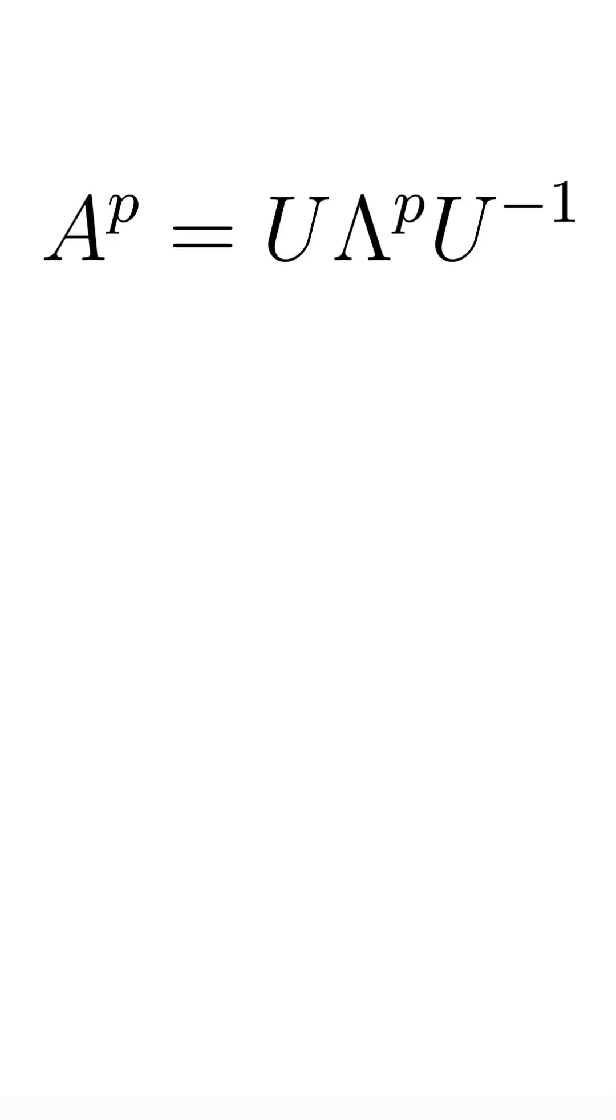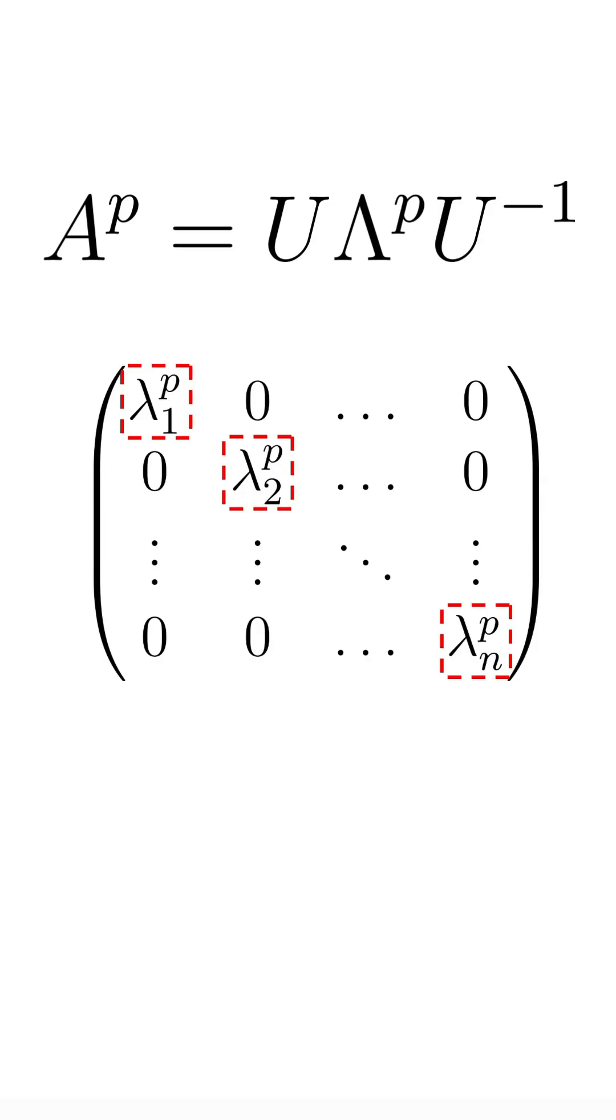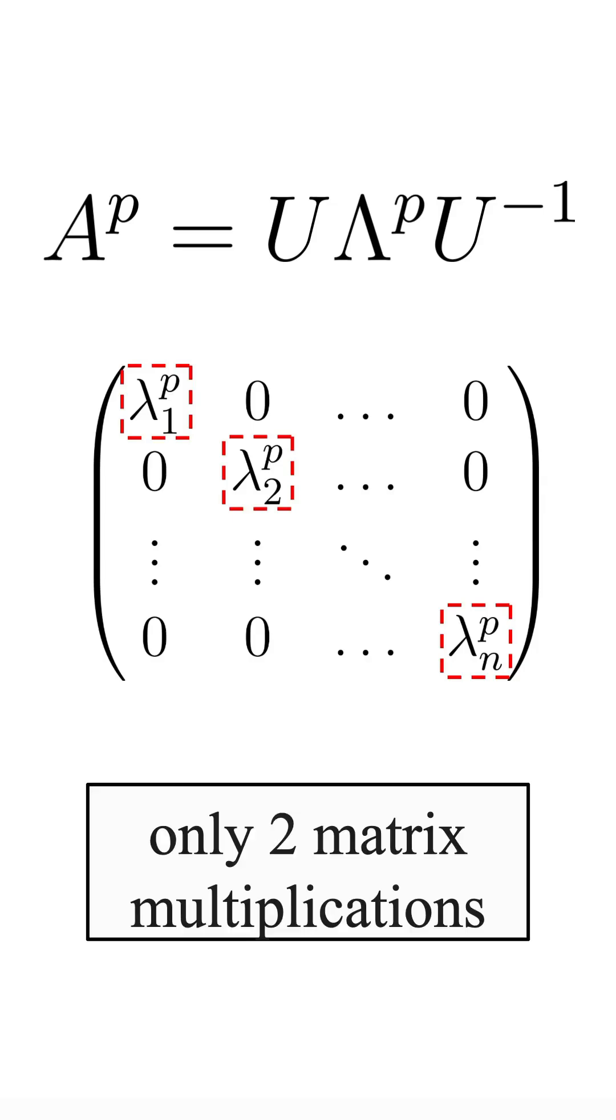Now, because the matrix lambda is a diagonal matrix containing the eigenvalues, raising it to the power of p is very fast. We just have to raise every individual term on the diagonal to the power of p, and thus, we have to perform only 2 matrix multiplications.